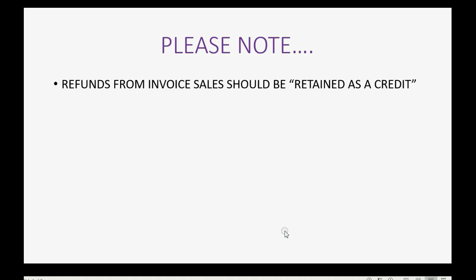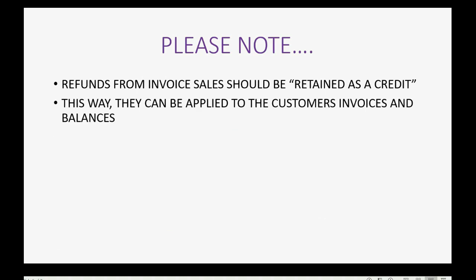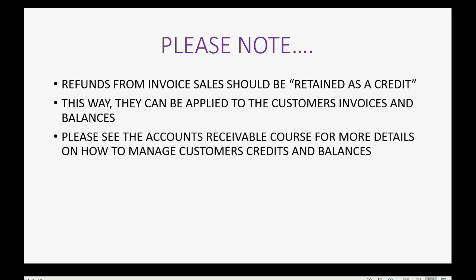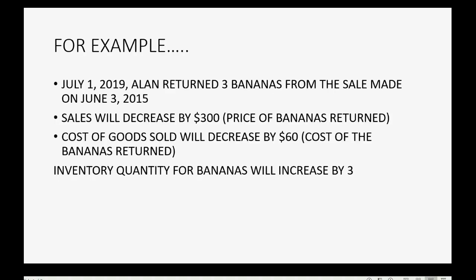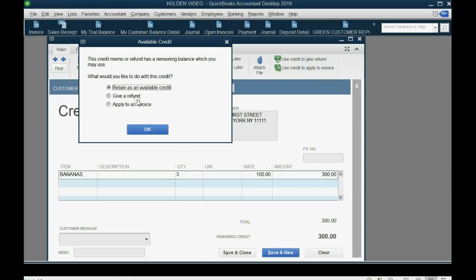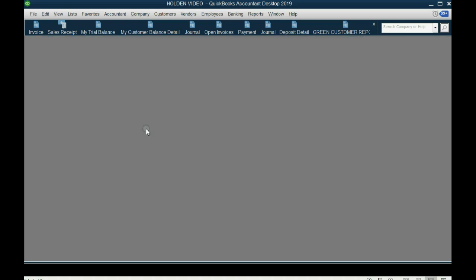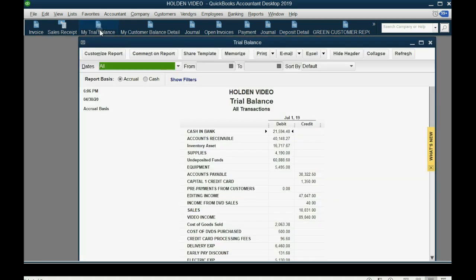When you save, a dialog box appears. Note that refunds from invoice sales should be retained as a credit so they can be applied to the customer's invoices and balances. For more details on managing customer credits, see the accounts receivable course. Select 'Retain as an available credit' and click OK. Then open the trial balance and double-click the sales account.